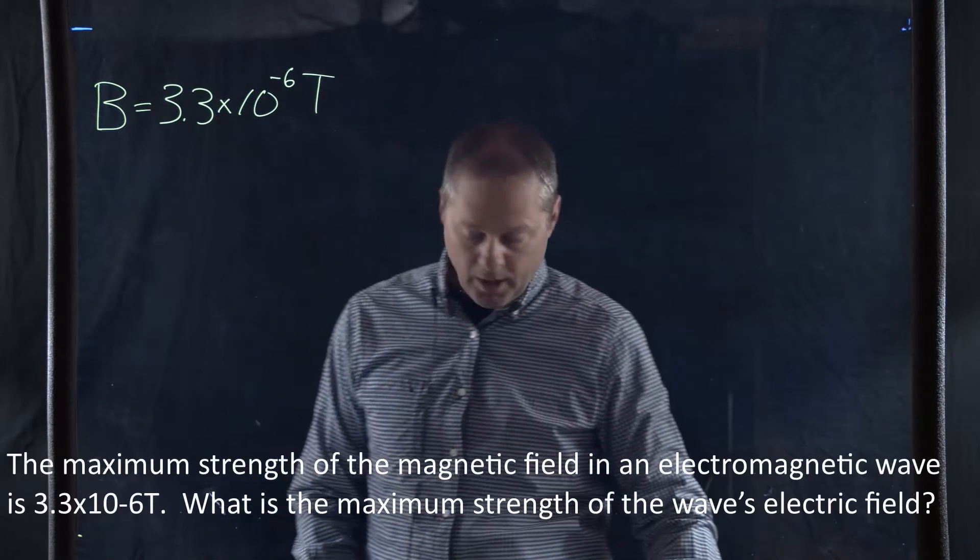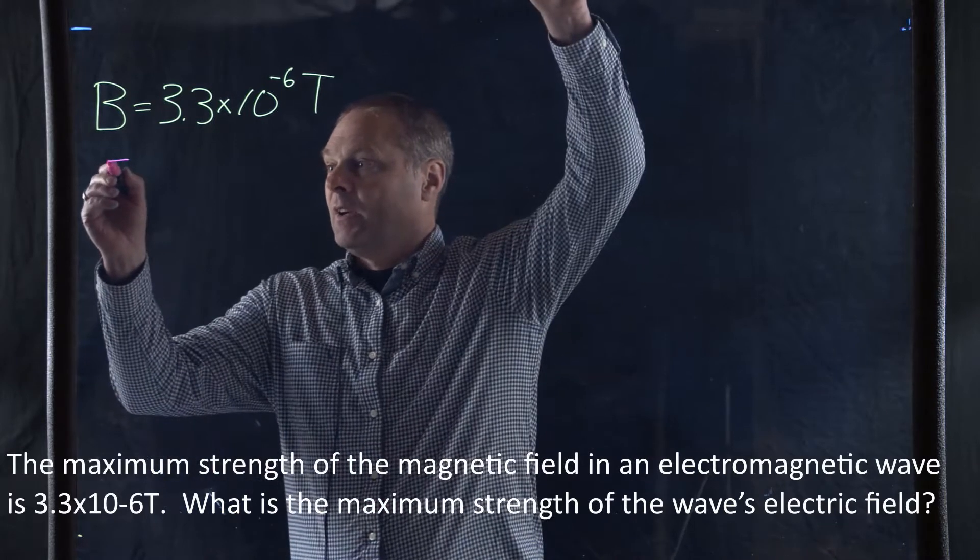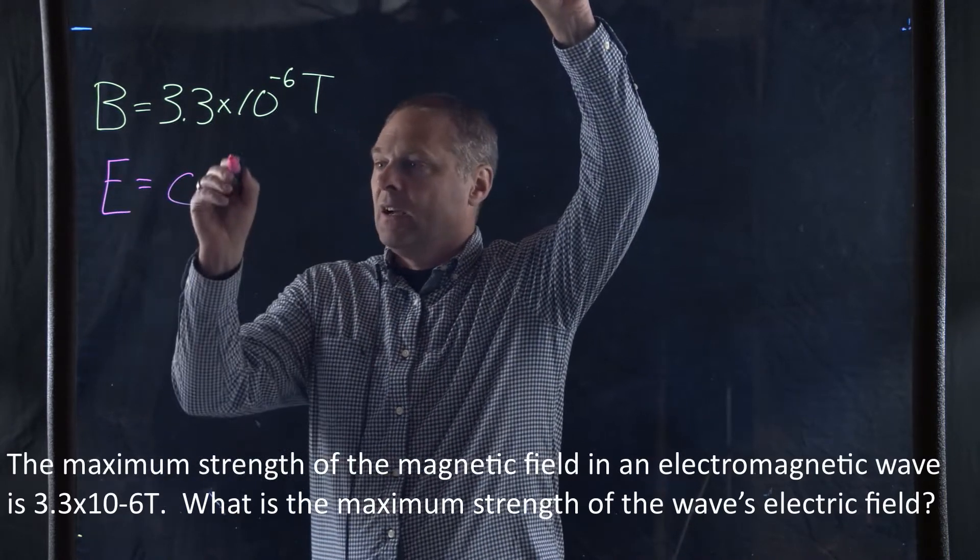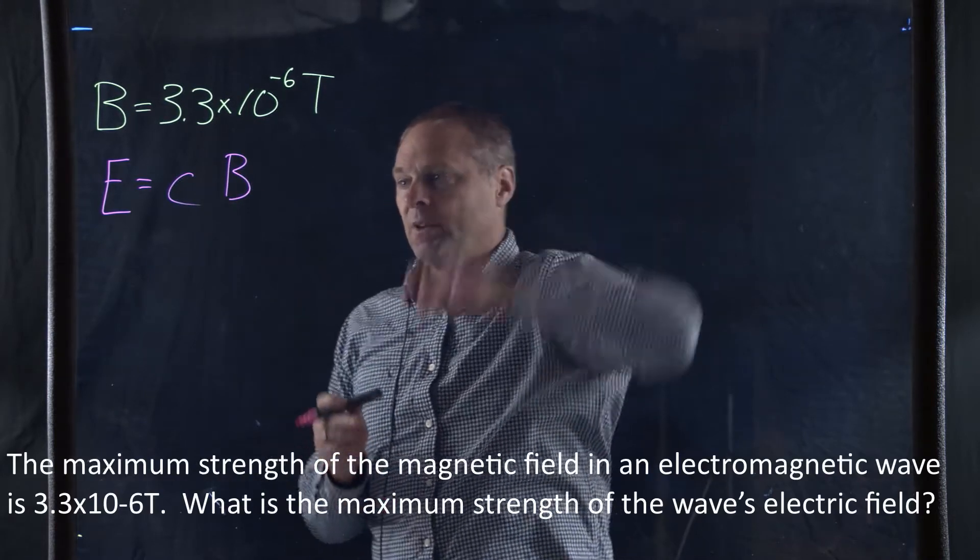Now for this problem, we're going to use the following equation. The strength of the electric field is going to be equal to the speed of light times the strength of the magnetic field.